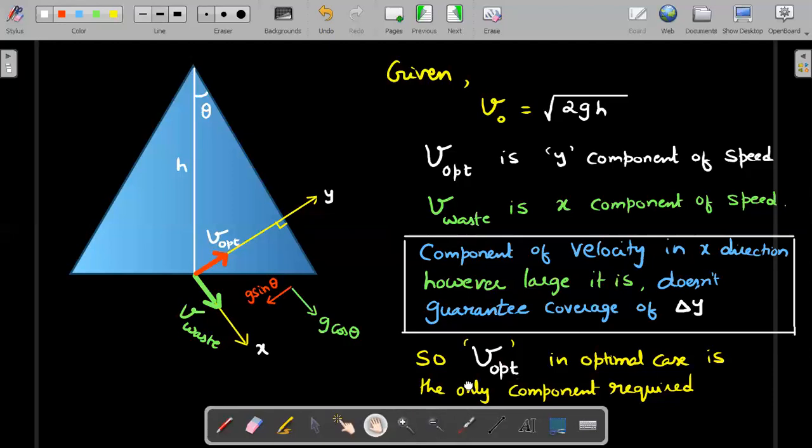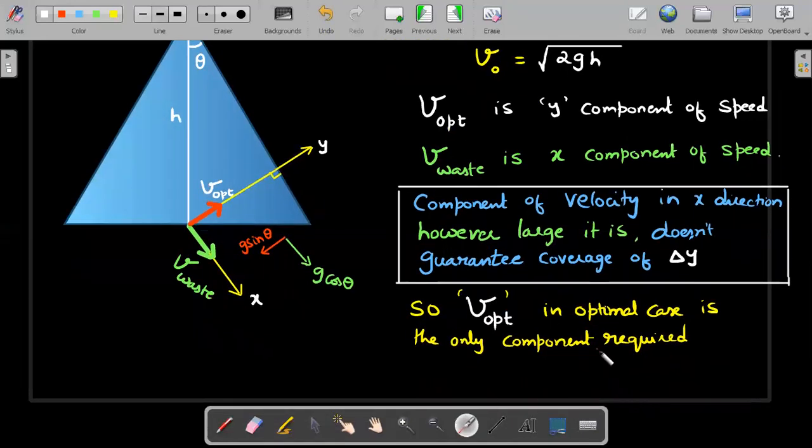In that minimal case, V_opt in the optimal case would be the only component required. What should this value be? This value should fight against gravity to cover this height. How much is this height? That would be h sin θ.